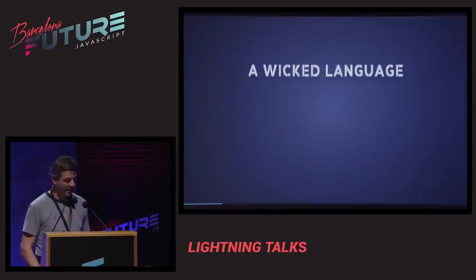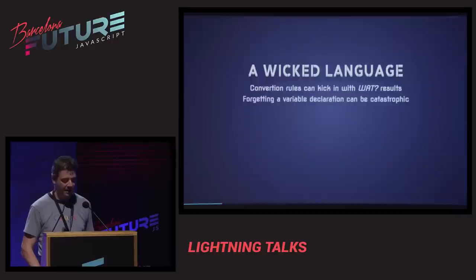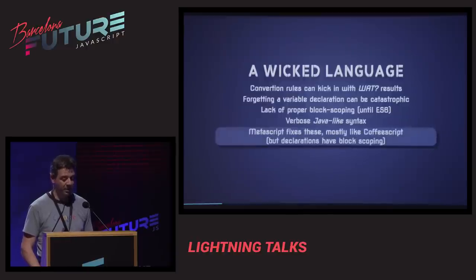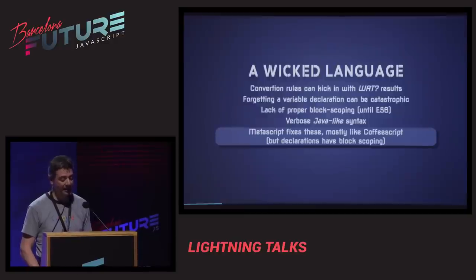JavaScript is a weaker language. Conversion rules can kick in with obvious results, and forgetting a variable declaration can be a real problem. It doesn't really have block scoping until ES6, and it has a verbose syntax which can be a problem for somebody. Metascript has a CoffeeScript style — declarations have block scoping.